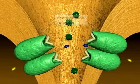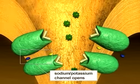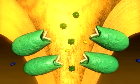Binding of acetylcholine to receptors immediately opens ion channels, allowing sodium ions to rush into the muscle fiber and potassium ions to diffuse out.